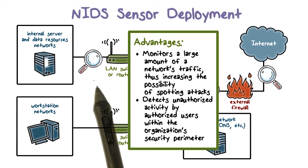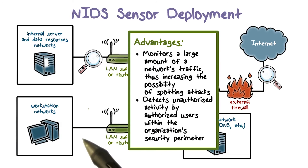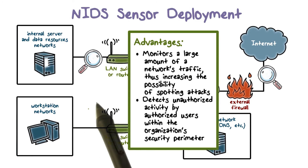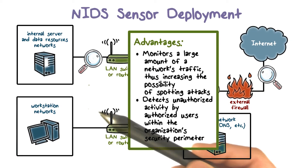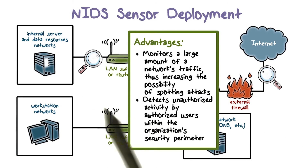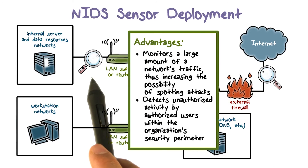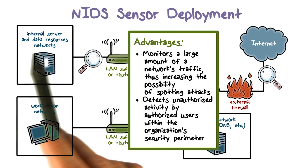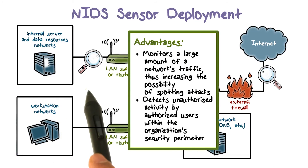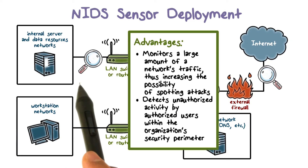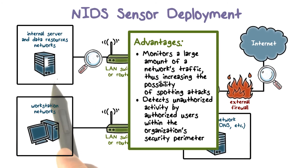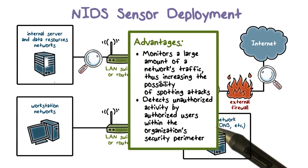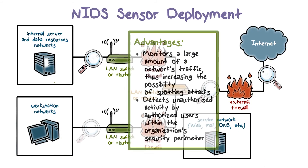A network IDS at this location can perform more detailed analysis of traffic data. Compared with a network IDS at the perimeter, it has a smaller amount of traffic volume due to the fact that it only monitors traffic to a subnet and the servers. In addition, it can also detect intrusions from inside the network.